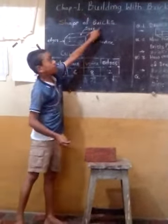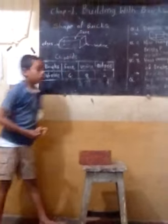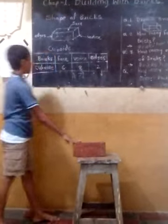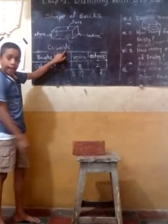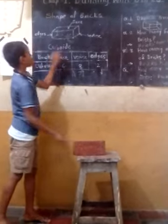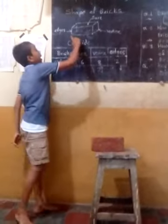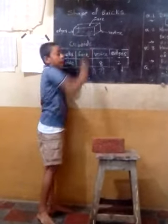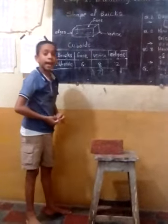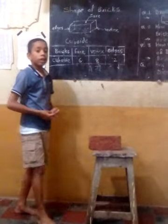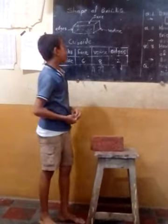Shape of bricks. Bricks can be oriented like this, or like this. All faces of bricks are like rectangular shapes.